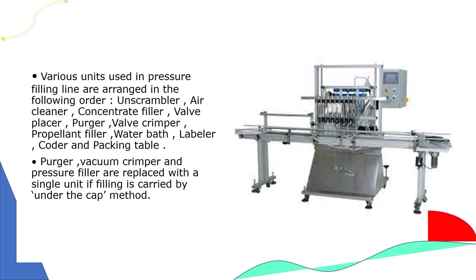Various units used in the pressure filling line in order are: unscrambler, air cleaner, concentrate filler, valve placer, vacuum crimper, valve crimper, propellant filler, water bath, labeler, coder, and packing table. The vacuum crimper and pressure filler are replaced with a single unit if filling is carried out by the under-the-cap method.